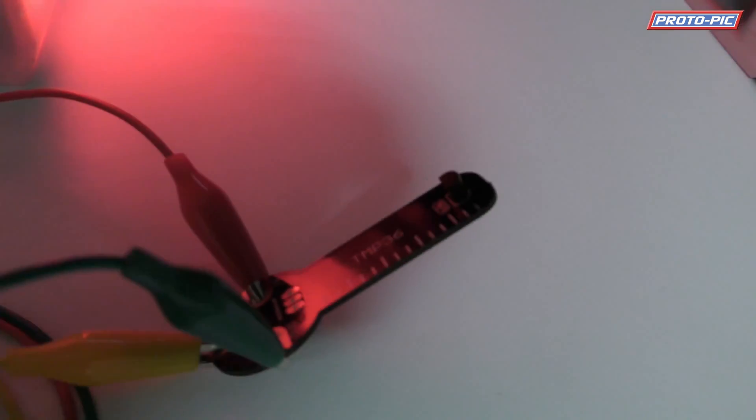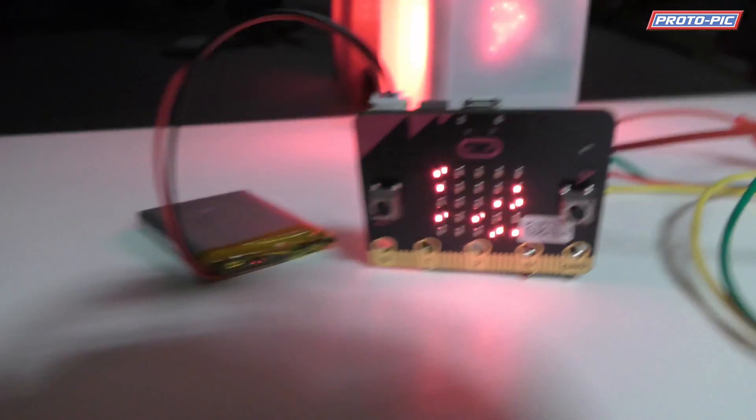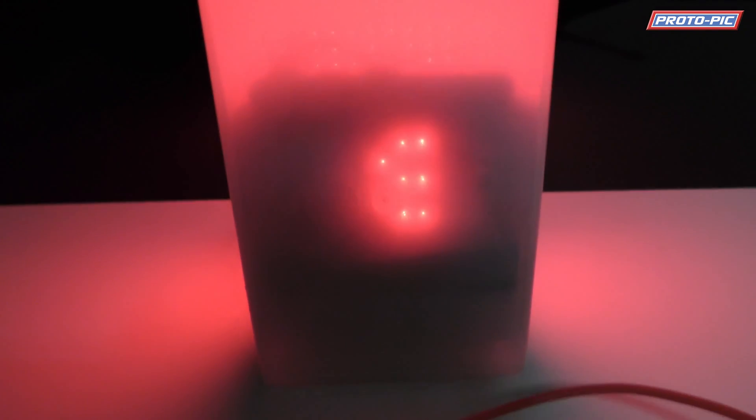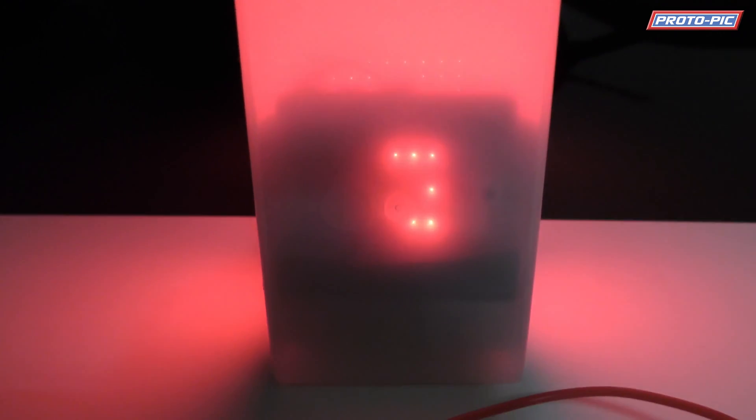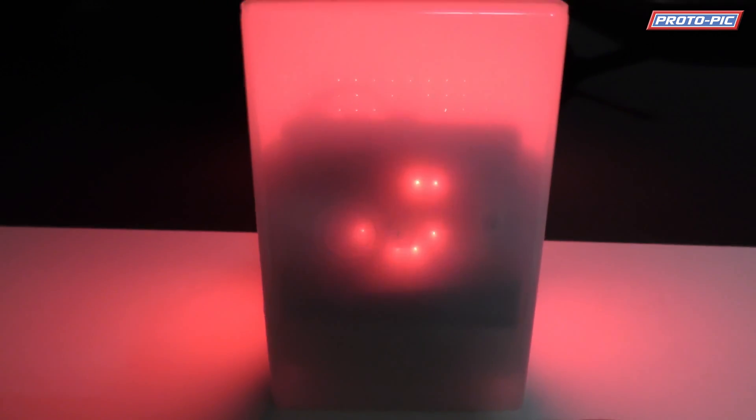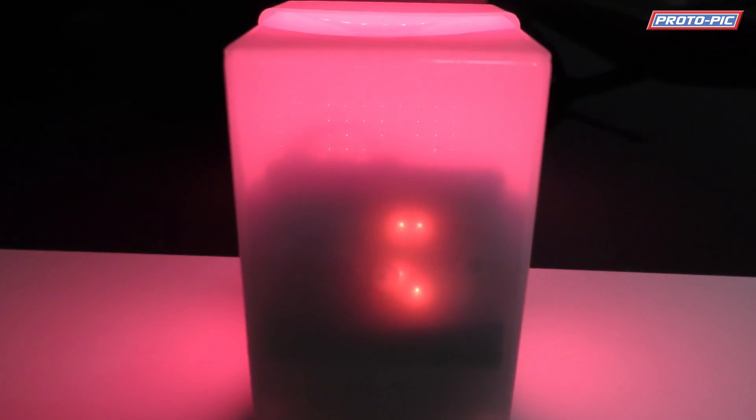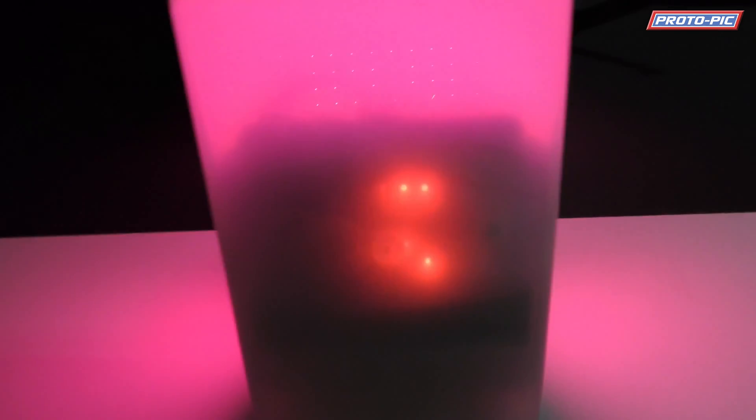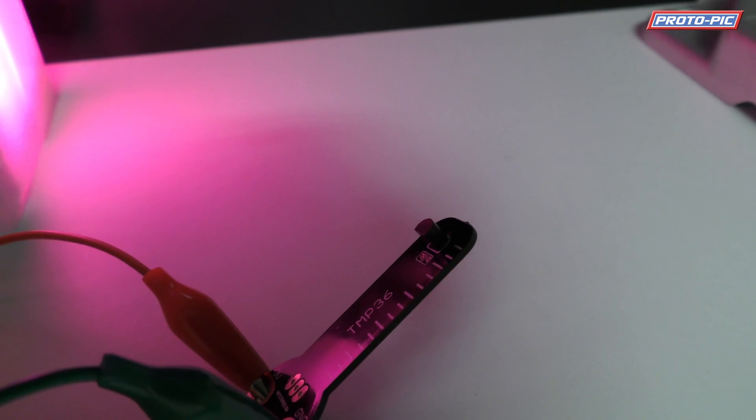So you've got your TMP36 here on a breakout board. You've got your microbit here and a LiPo battery. And in here you can just about make out the display so it's 35.7 degrees. And it's starting to cool down again now because I've taken the hot water bottle off of the sensor.